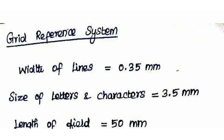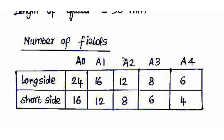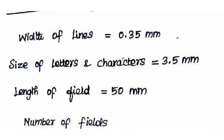The width of each field in the grid reference system is 50 mm. For different sheet sizes A0 through A4, the number of fields varies. For the A0 sheet, the long side has 24 fields and the short side has 16 fields. These numbers are halved for smaller sheet sizes — for example, 16 and 12 for A1, then 12 and 8, and so on. Left to right is numerical and top to bottom is alphabetical order.